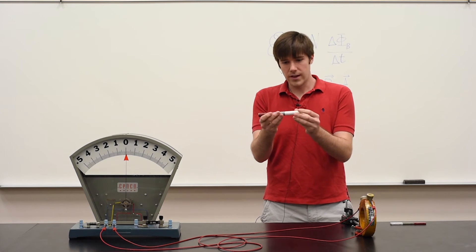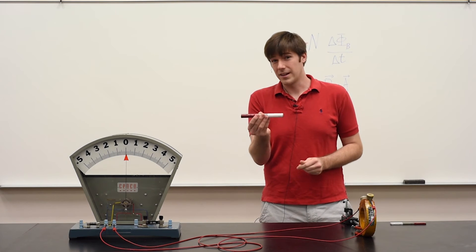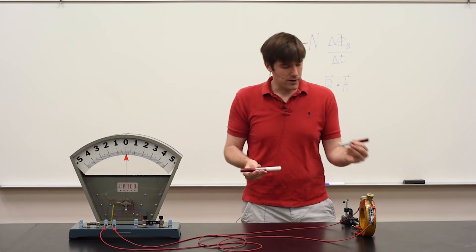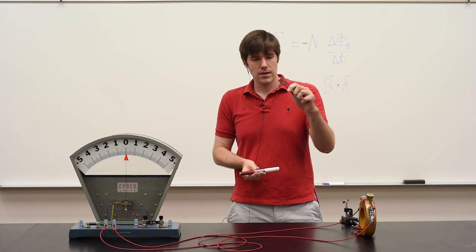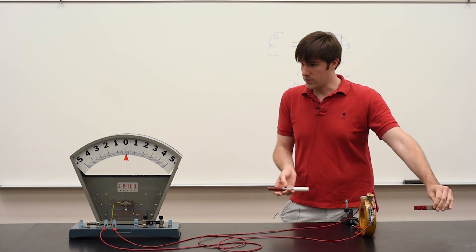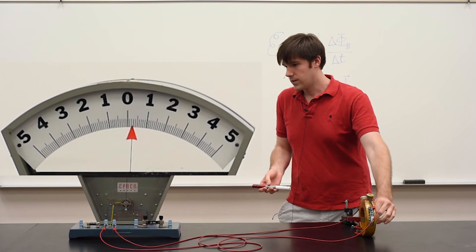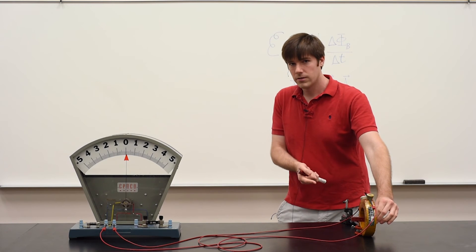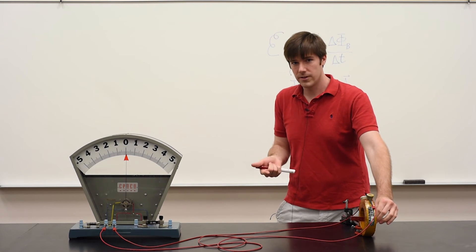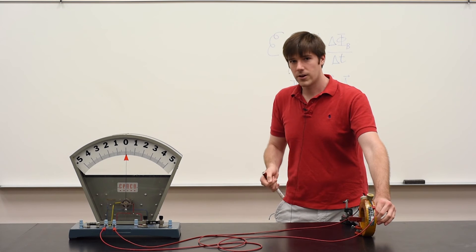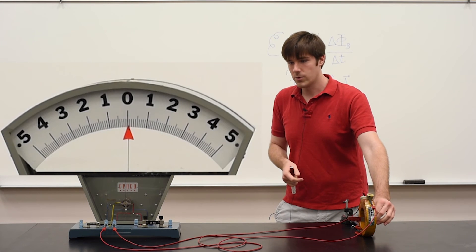Now, this was a certain bar magnet with a certain magnetic field strength. I have a weaker bar magnet. And you'll notice that compared to the original, since the magnetic field is smaller, the flux is smaller. So the change in flux is smaller, and therefore the current induced is much weaker.